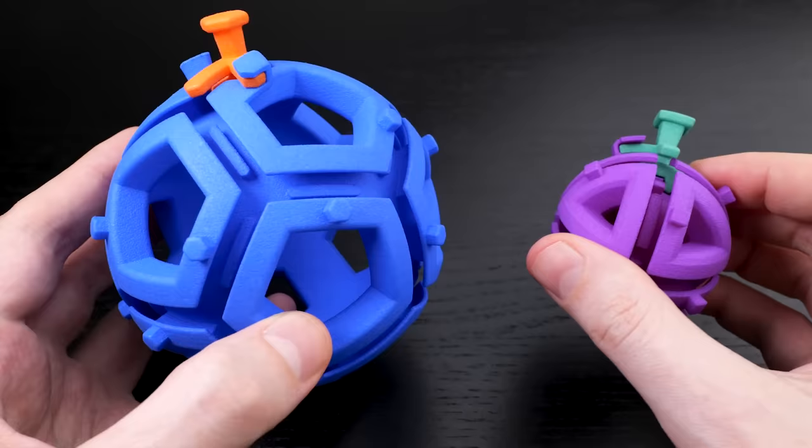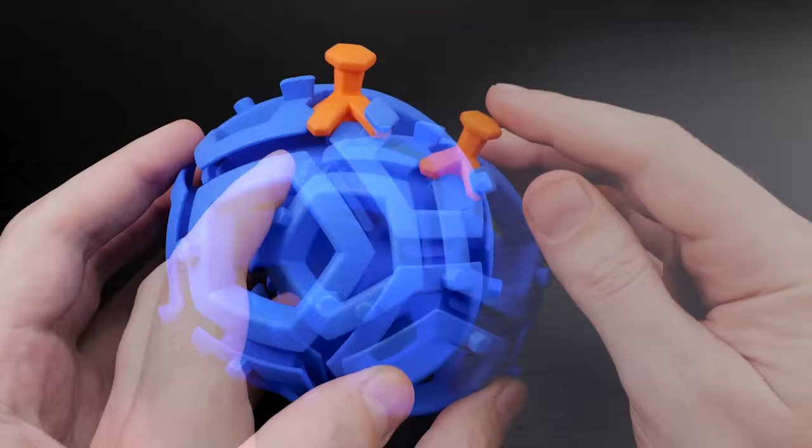Just as with the octahedral version, the goal is to get this little piece, called a rook, out of the sphere.